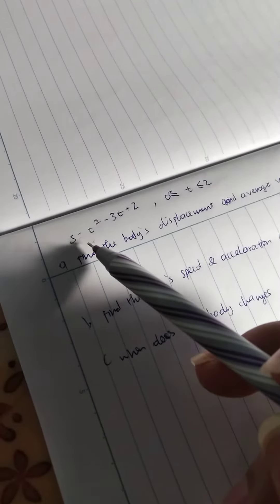This is an exercise in the Thomas calculus book. So first we have the equation s equals t squared minus 3t plus 2.